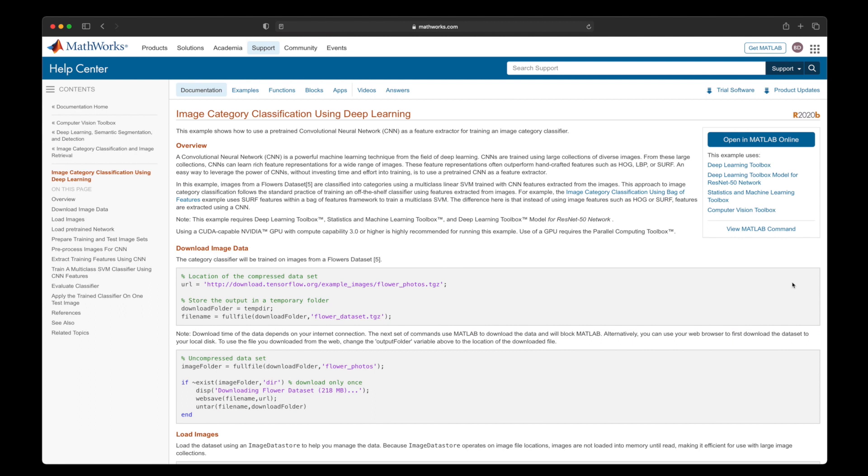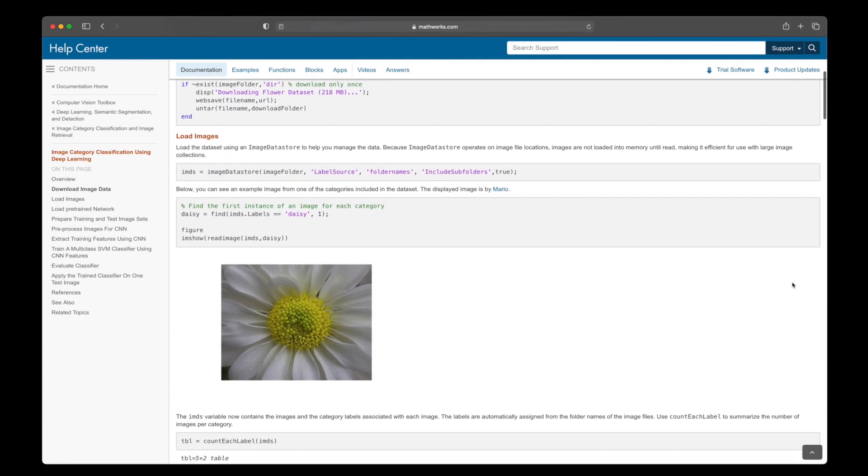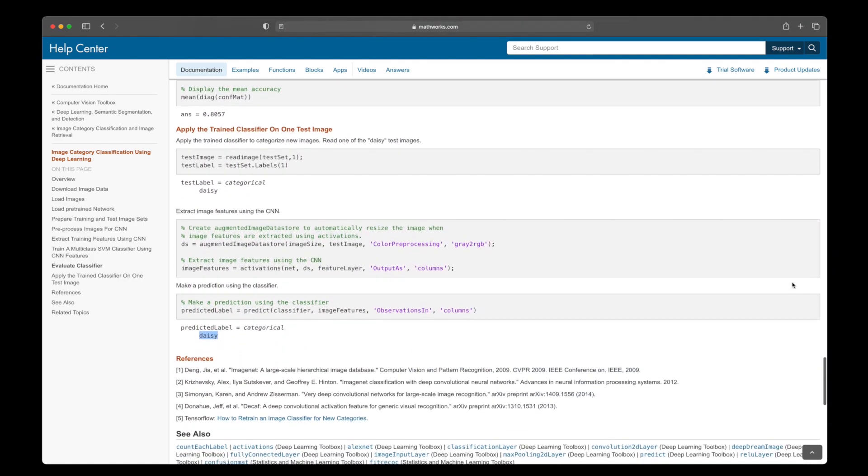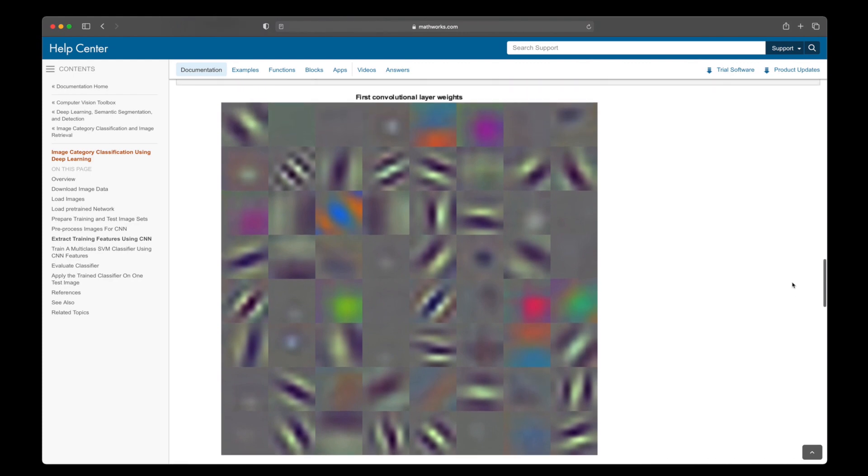To see this, let's look at the MATLAB example image category classification using deep learning. The input image is a daisy. And if you apply the trained classifier on this test image, it does, in fact, return the label daisy. And if we scroll back up, what we're seeing here is a visualization of the first convolutional layer weights. These are the primitive features that help this network distinguish between a daisy and something else.